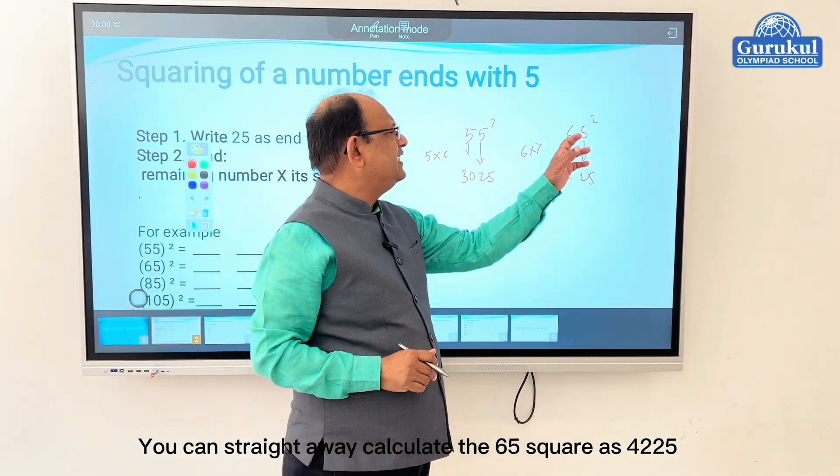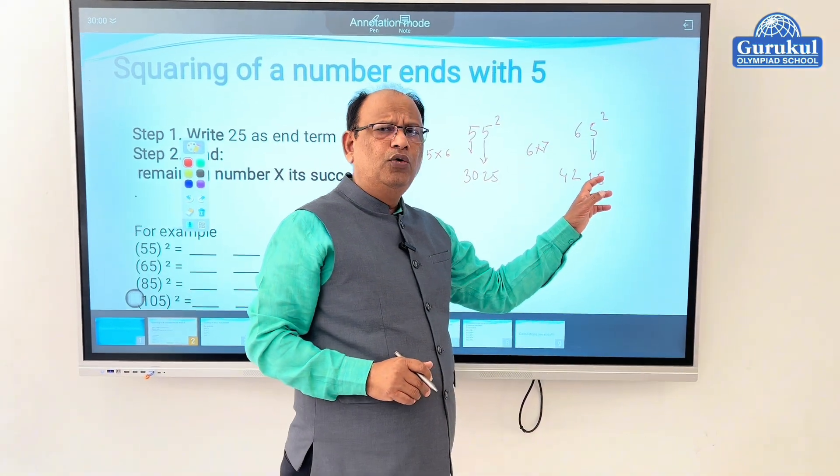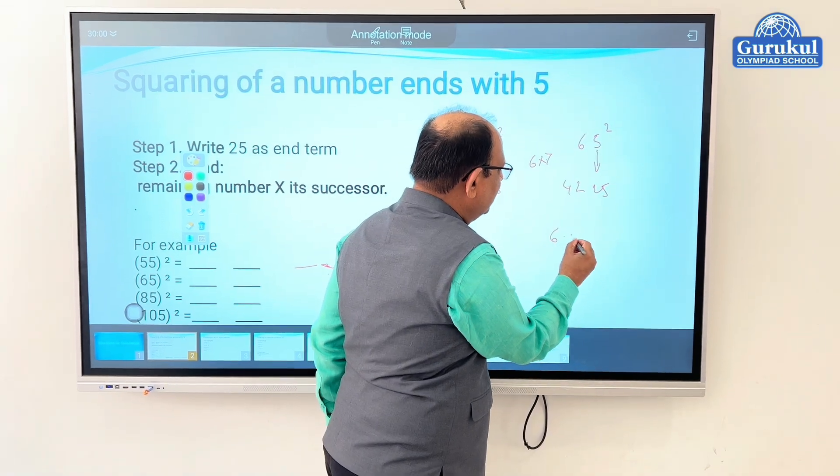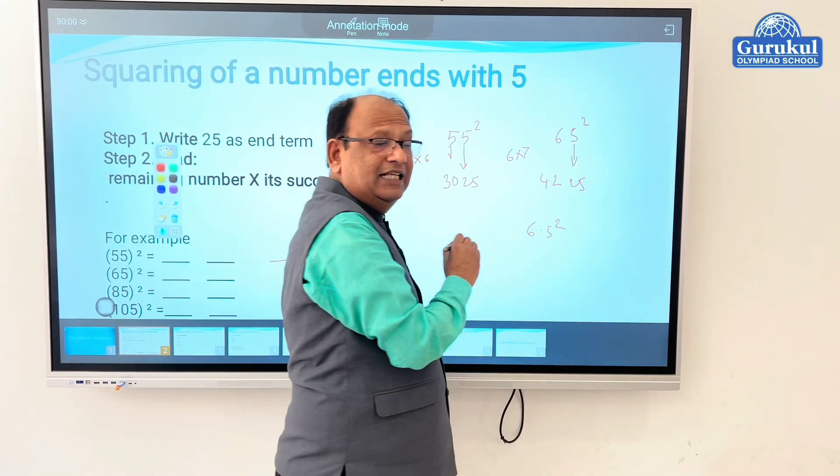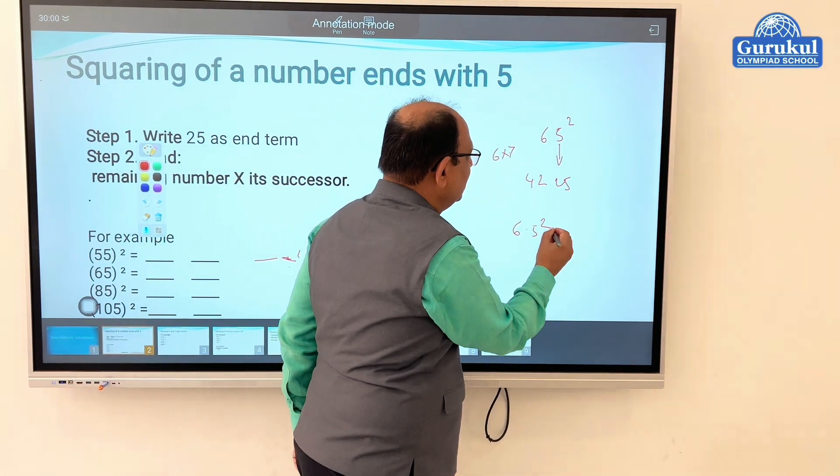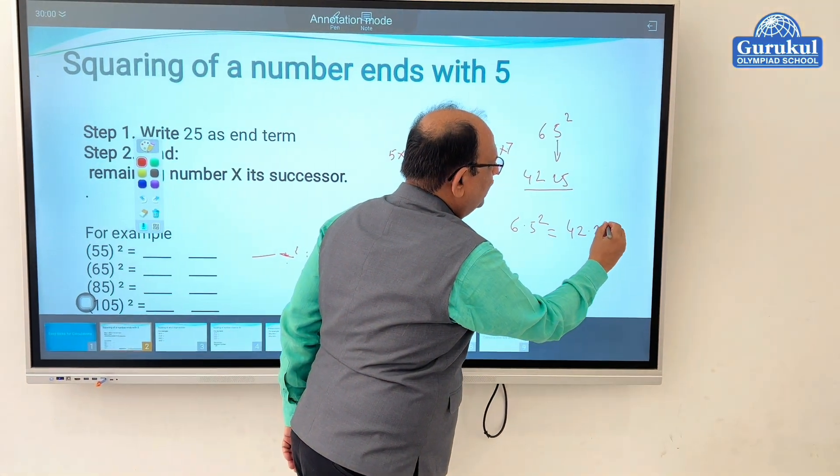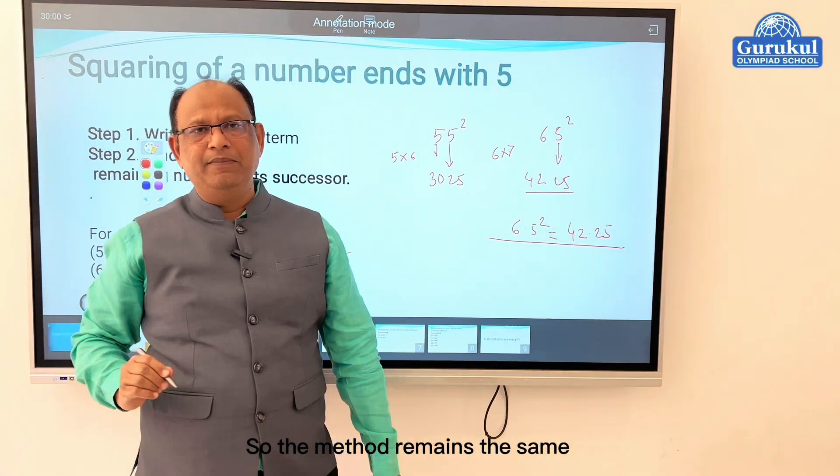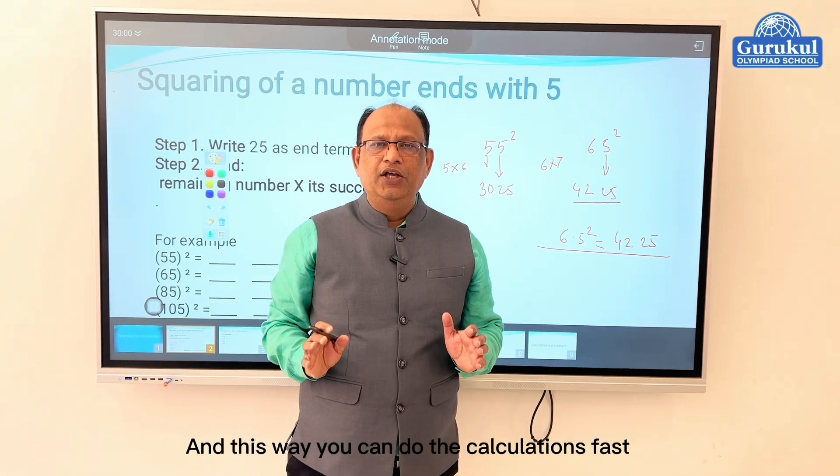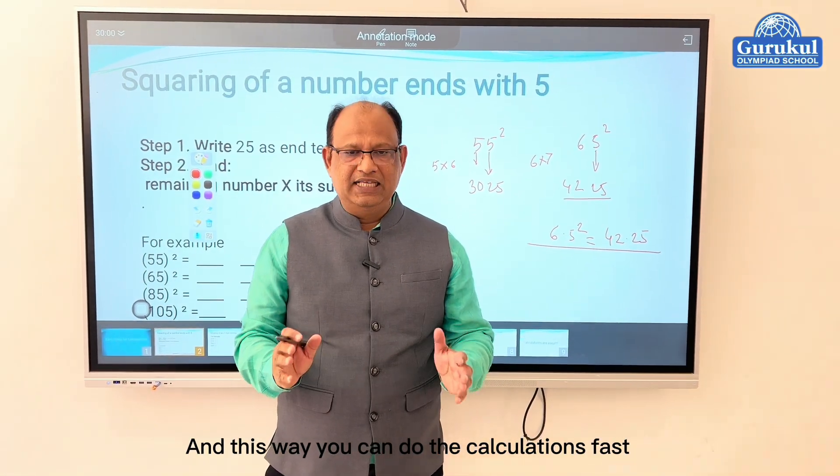You can straight away calculate sixty-five squared as 4225. And if you have to find 6.5 squared, you know that this being a square, your answer will be the same, only 42.25. So the method remains the same. And this way you can do the calculations fast.